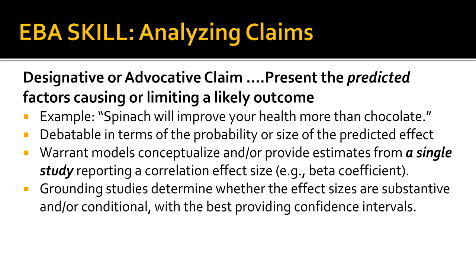For example, 'spinach will improve your health more than chocolate' is a designative claim. It designates which causal factors — spinach — are likely to have a more substantive impact on a desired outcome, health, than other causal factors such as chocolate. Designative claims can be debated primarily on the probability or size of the predicted effect. We can test the claims shown by examining the relative influence that spinach and chocolate have on health.